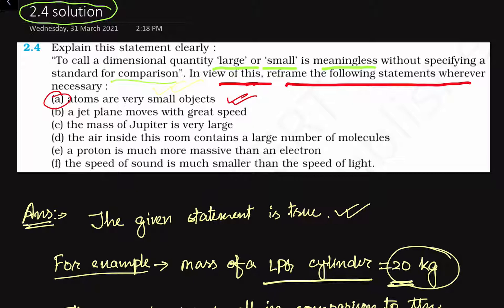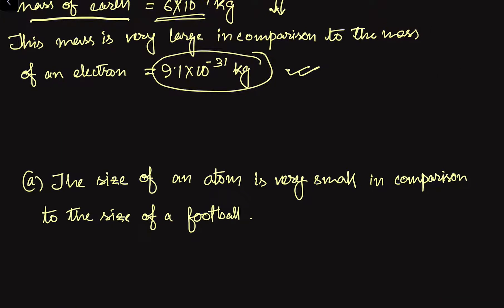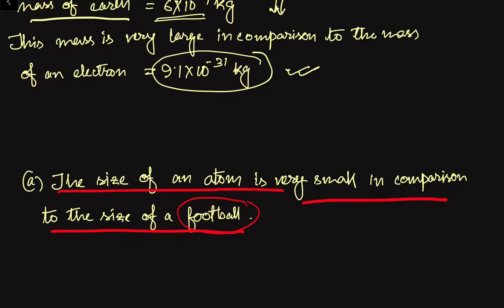If we want to reframe or rewrite this sentence with some comparison, then only we can say that the atoms are very small objects. If we say an atom is a very small object in comparison to, suppose, a basketball — but an atom can be very large or larger than an electron. So we have to mention some comparison with a standard quantity. The size of an atom is very small in comparison to the size of a football. Now the comparison is done, as a standard football diameter is fixed.